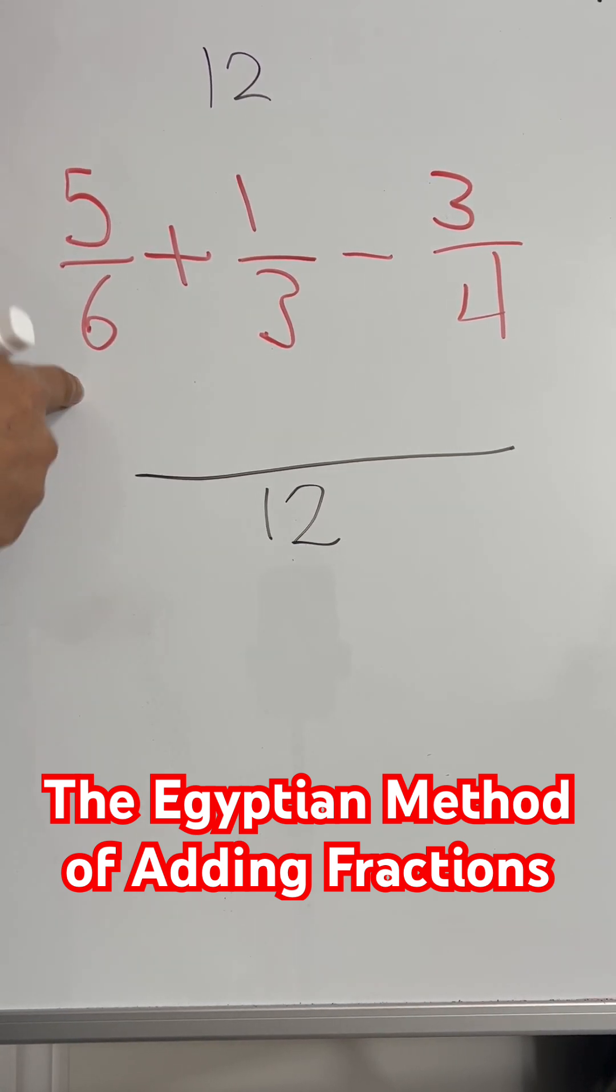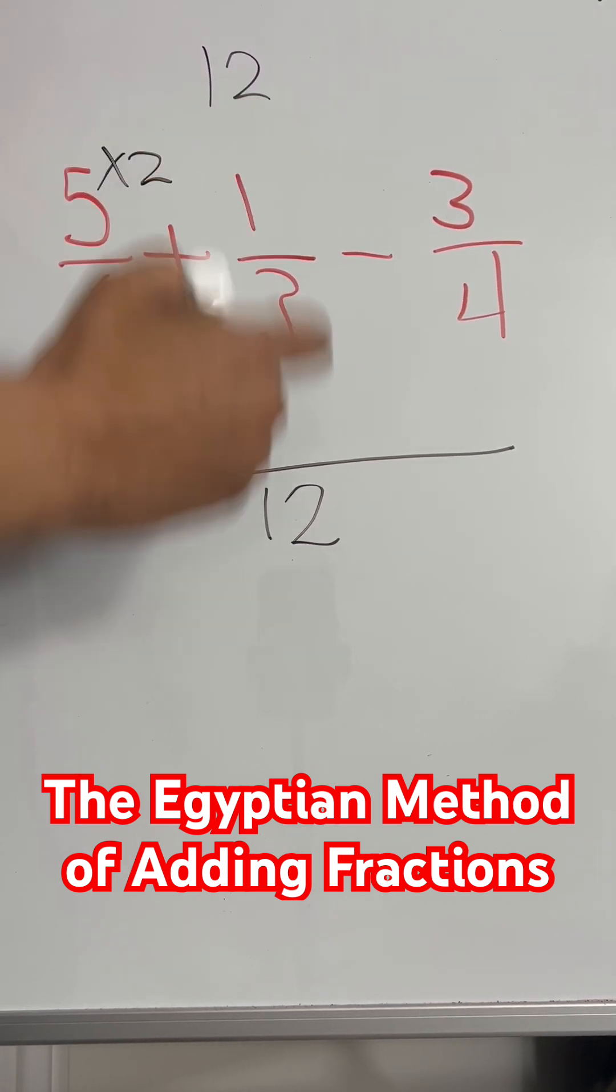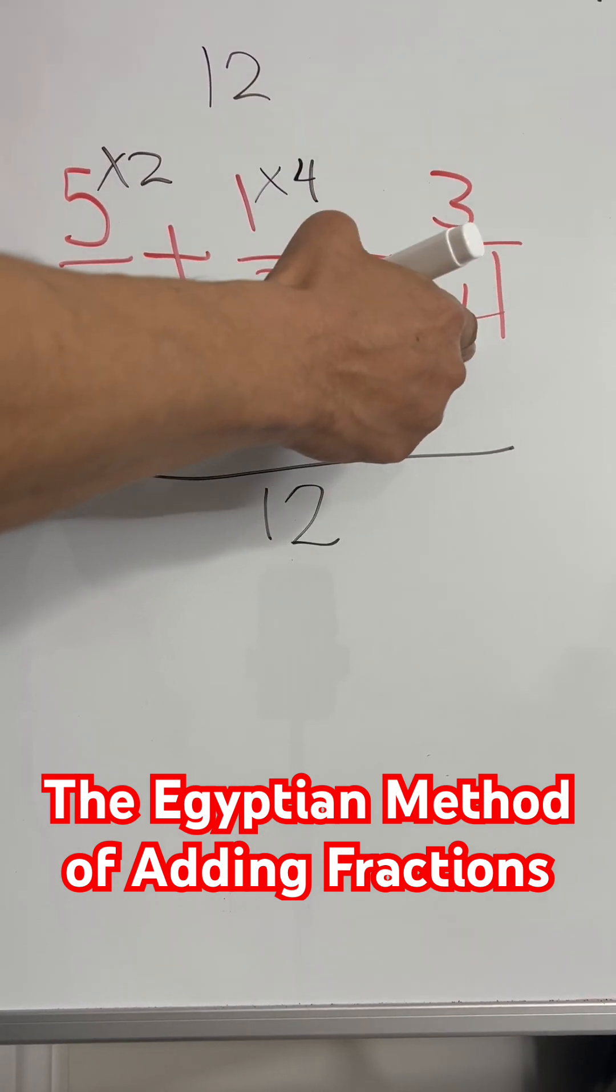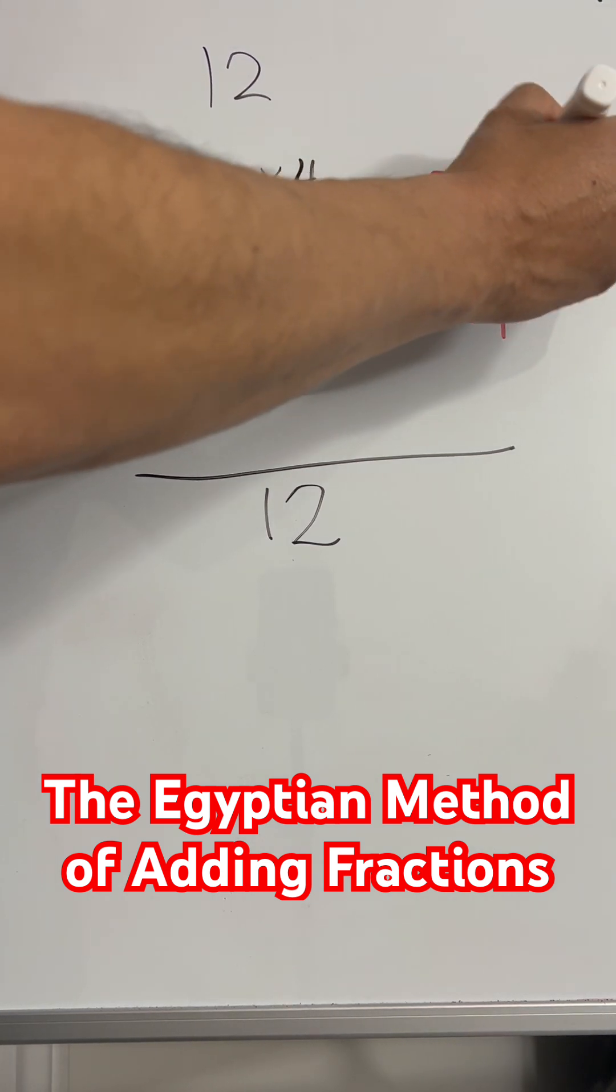So 12 divided by 6 is 2, so you have to multiply this by 2. 12 divided by 3 is 4, so you have to multiply the 1 by 4. 12 divided by 4 is 3, so you have to multiply the 3 by 3.